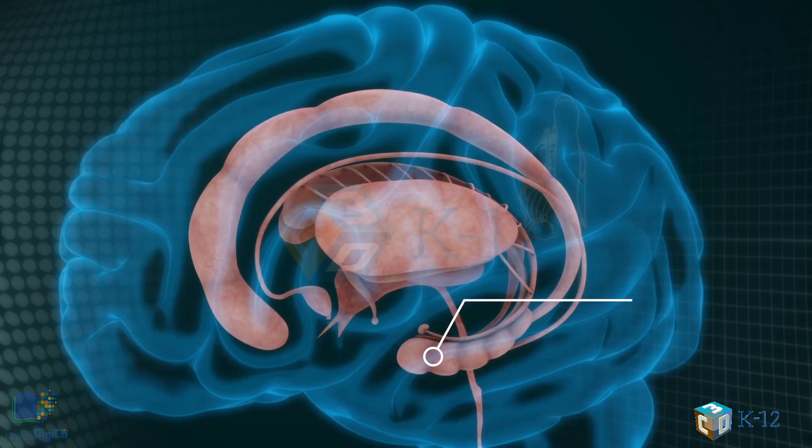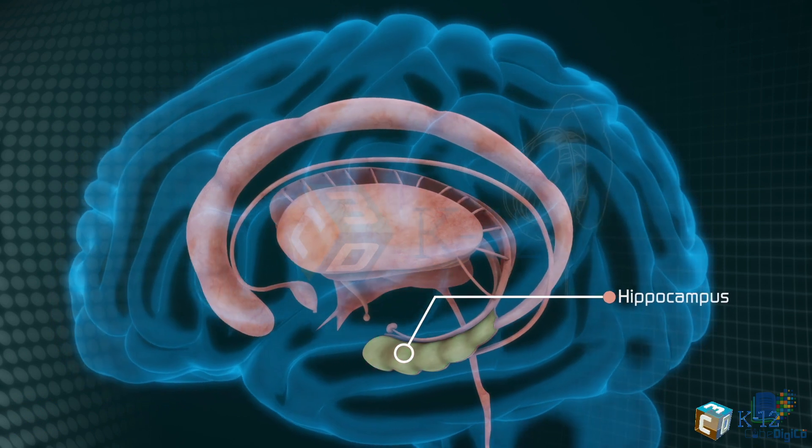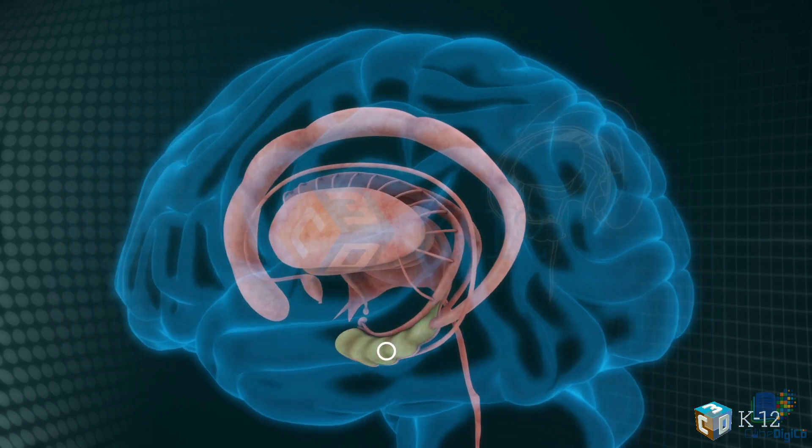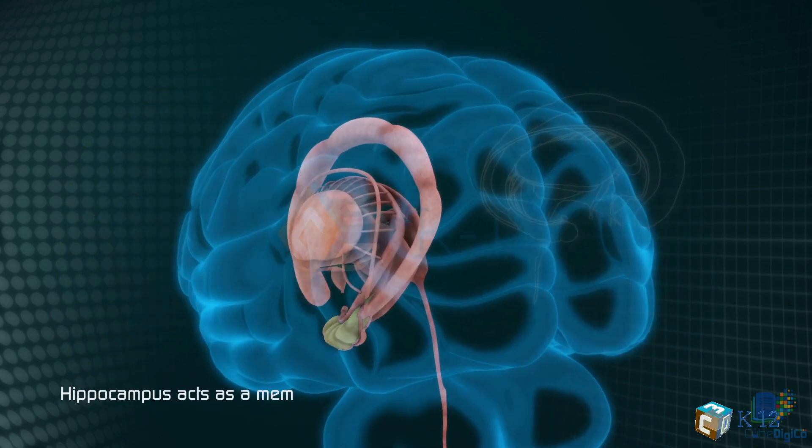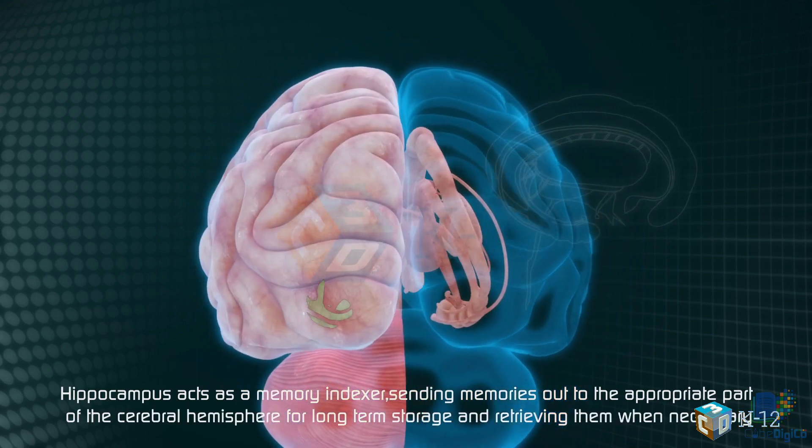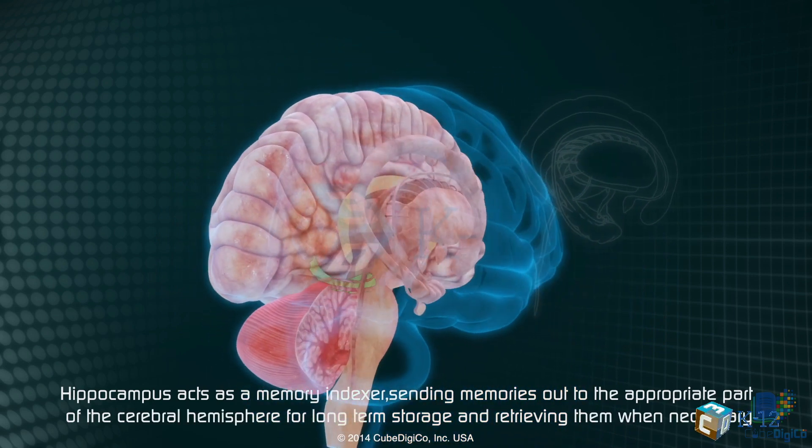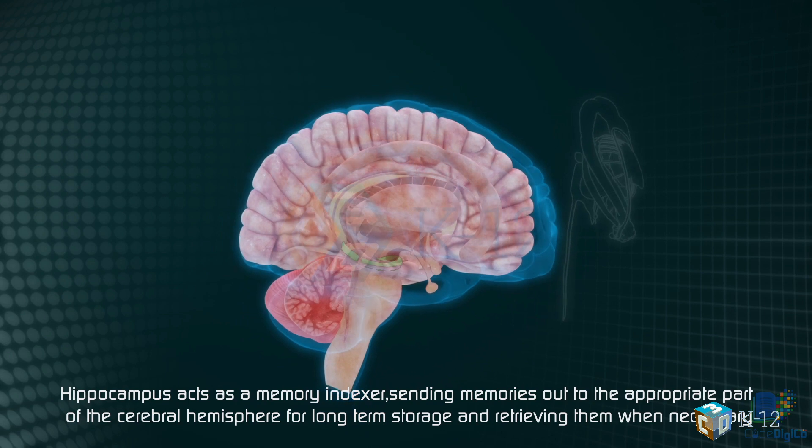An arcing tract of nerve cells leads from the hypothalamus and the thalamus to the hippocampus. This tiny nub acts as a memory indexer, sending memories out to the appropriate part of the cerebral hemispheres for long-term storage and retrieving them when necessary.